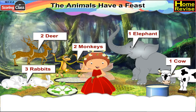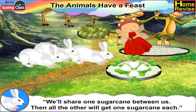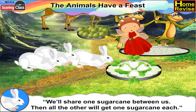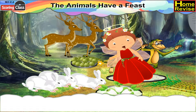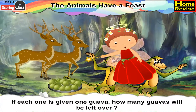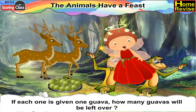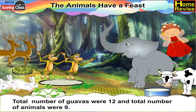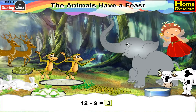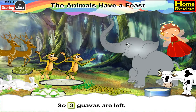But then, the rabbit said, we'll share one sugar cane between us. Then all the others will get one sugar cane each. If each one is given one guava, how many guavas will be left over? The total number of guavas were twelve, and total number of animals, nine. Twelve minus nine makes it three. So, three guavas are left.